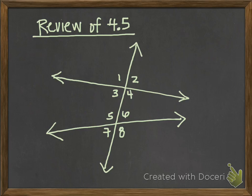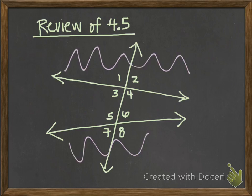Same side exterior angles are going to be above or below — outside of those two lines, depending on how your two lines are oriented. An example of same side exterior would be 1 and 7, or 2 and 8. Please make sure to add those to your notes.